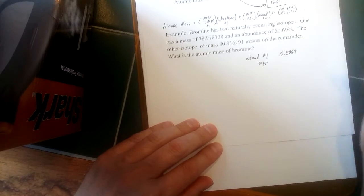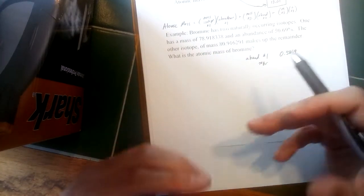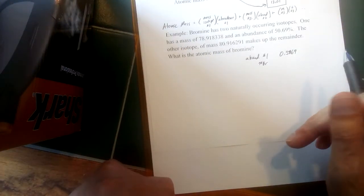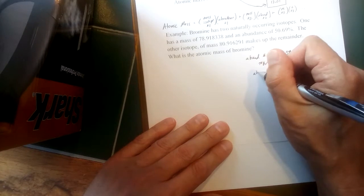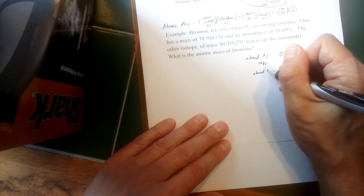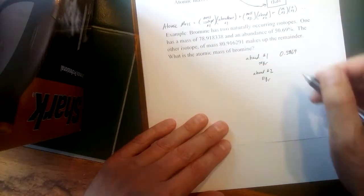Now we're told the other isotope makes up the remainder. Well, the whole sample would be a hundred percent, or if you combine the abundances that should add up to one. So the abundance of the second isotope, which would be bromine-81 in this case based on the masses here, would have to be 1 minus 0.5069.